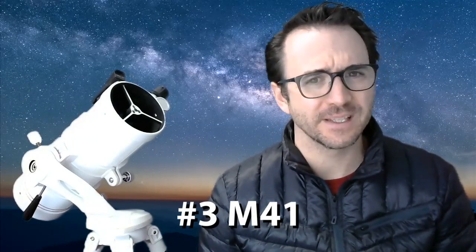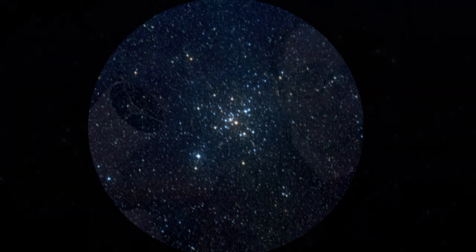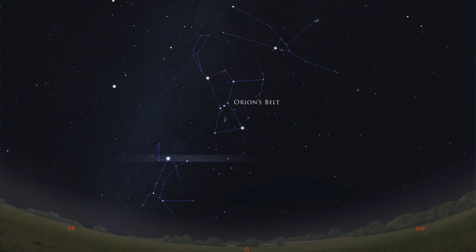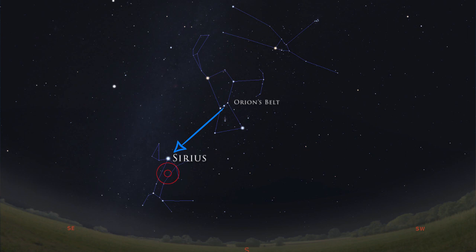Moving on to our third target, another open cluster called M41. Through a telescope, it should look something like this. This is in the constellation Canis Major. To find M41, start again with Orion's belt, then move down to the brightest star in the sky, Sirius. Use your imagination to form the body of the great dog, which shouldn't be too hard because this constellation really does look like a dog. M41 is found right here in the body of the dog.